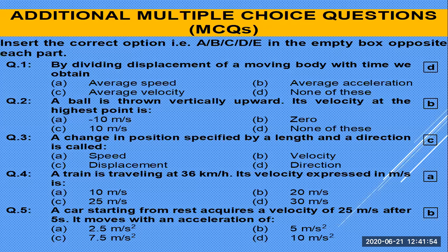These are additional MCQs linked to kinematics, and the answers are also given. You must understand and insert the correct options — A, B, C, or D — in the empty box opposite each question. By dividing the displacement of a moving body by time, what do we obtain? Average velocity, average speed, average acceleration, or none?